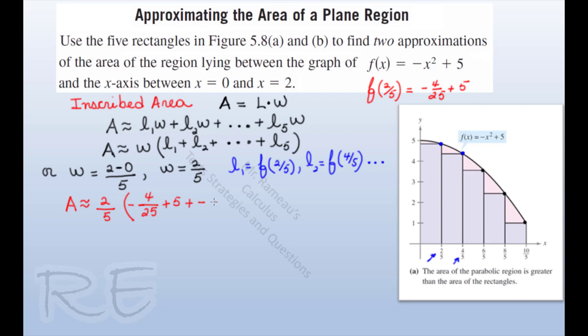That's L₁ plus L₂, which is negative 16/25 plus 5, and so on. Negative six-fifths squared will be 36/25 plus 5. Negative 64/25 plus 5. And f of 2 is equal to negative 4 plus 5, which is plus 1.